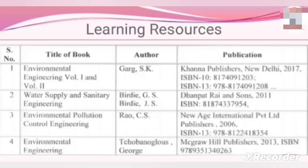Learning Resources. This is the list of books that we will refer to in this course study. First, Environmental Engineering Volume 1 and Volume 2 by Garg S.K., Khanna Publishers, New Delhi. Second, Water Supply and Sanitation Engineering by Birdi G.S., Dhanpat Rai and Sons. Third, Environmental Pollution Control Engineering by Rao C.S., New Age International Private Limited Publishers. Fourth, Environmental Engineering by Technologus George, McGraw Hill Publishers.